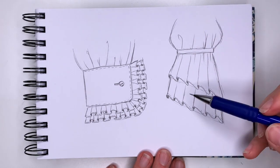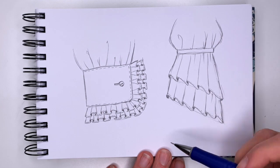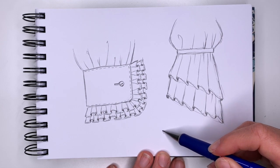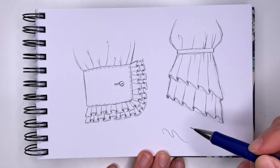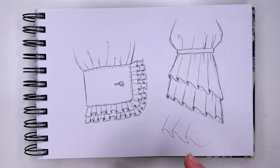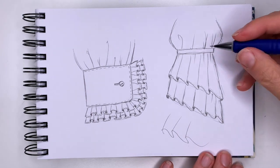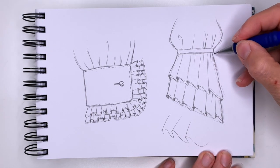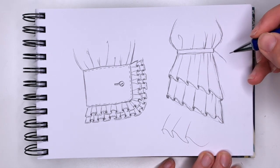Now, if you want your ruffles to be bigger, you would draw your squiggles bigger. So that shows you that the fabric is thicker or more flouncy. Now you can add a bow tie here if you want.